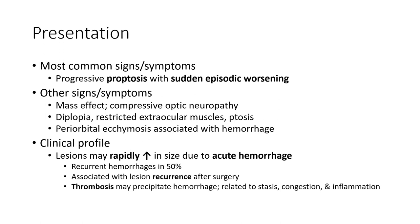Most common signs and symptoms: progressive proptosis with sudden episodic exacerbation. Other signs and symptoms include muscle effects, compressive optic neuropathy, hypnopia, restricted extraocular muscle movement, ptosis, and chemosis associated with hemorrhage.